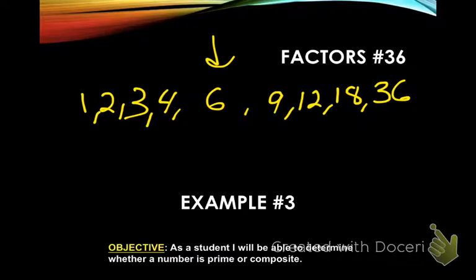After six times six, we're already past it — seven and eight don't have to be checked because seeing six and six indicated we were done. Those are our factors for thirty-six: one, two, three, four, six, nine, twelve, eighteen, and thirty-six.